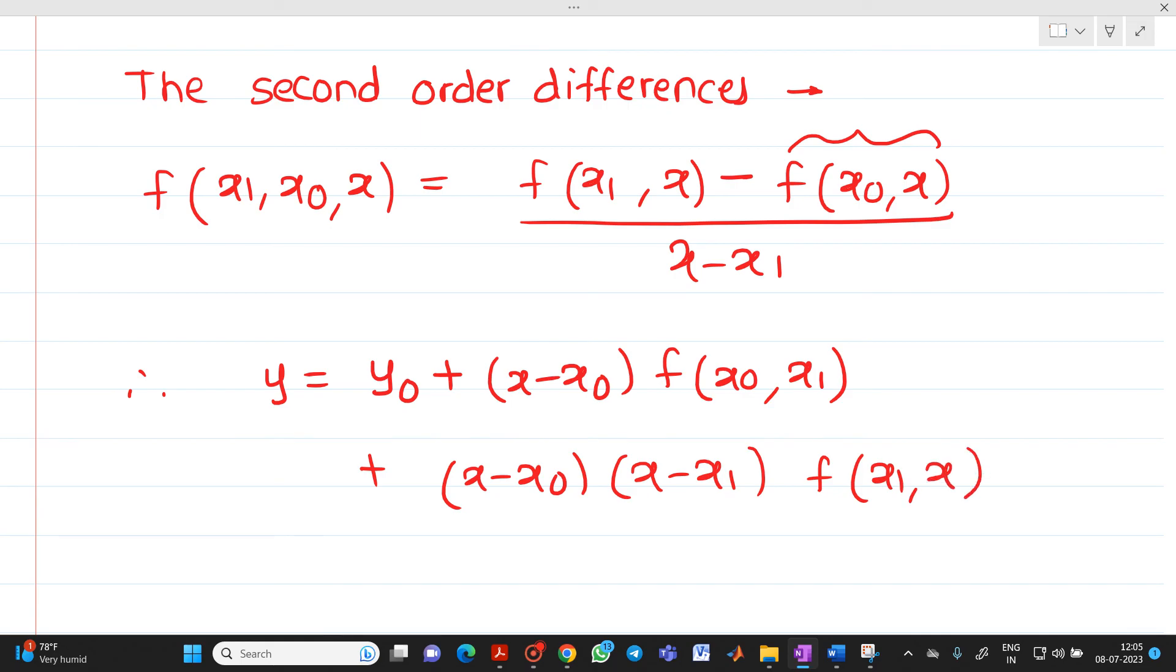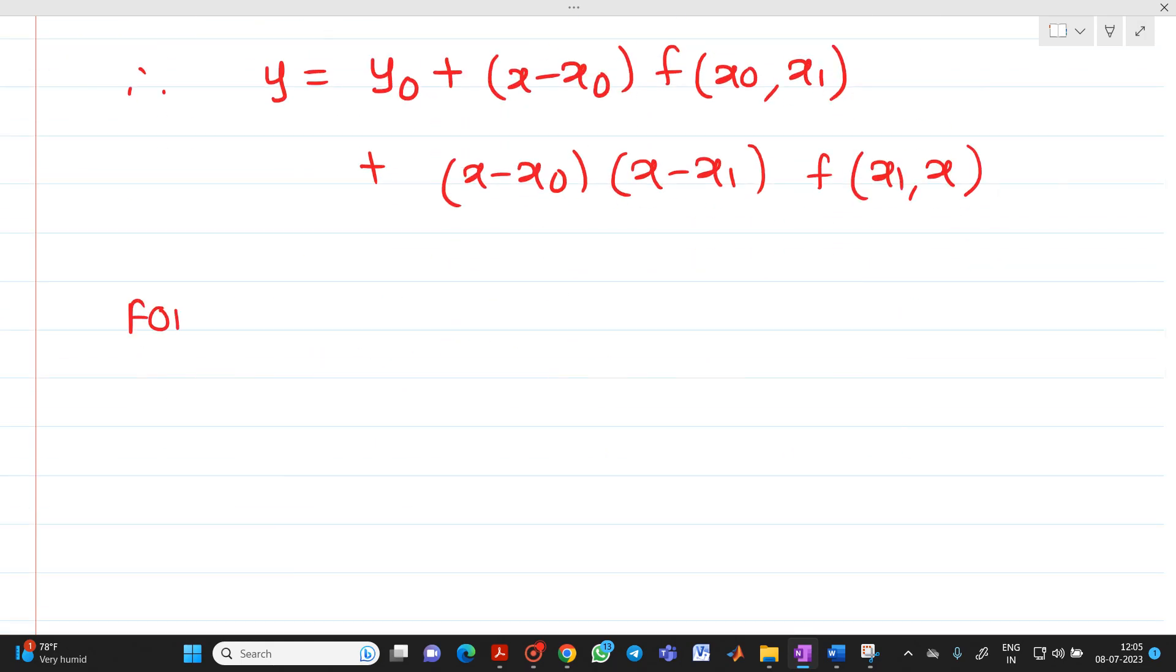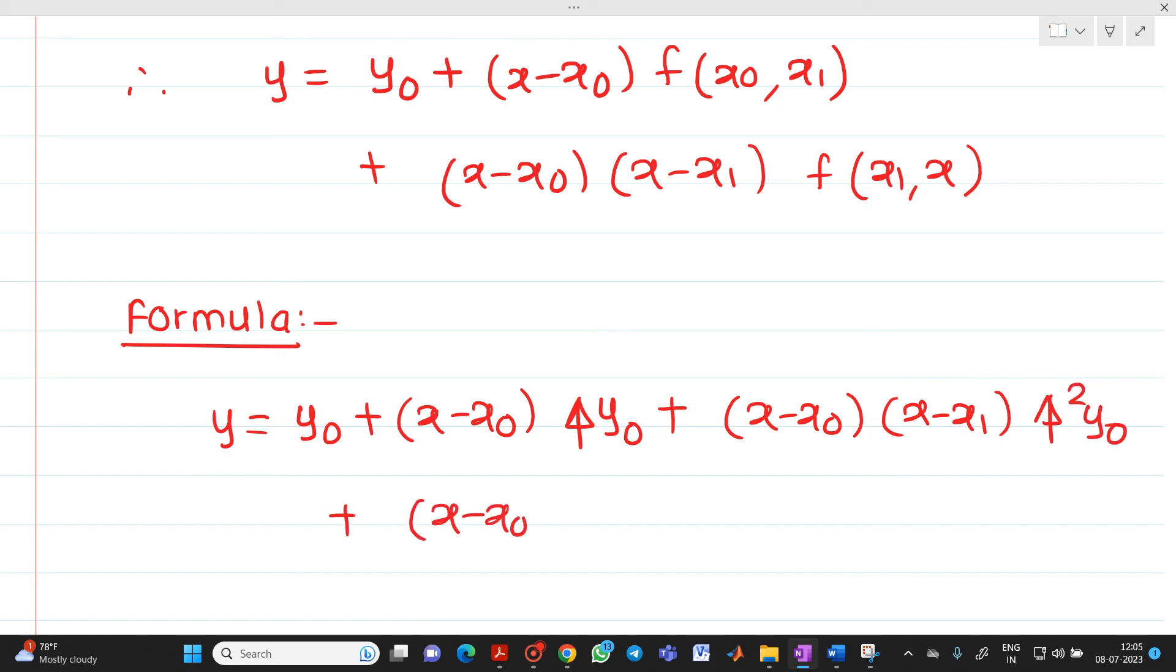Therefore, the final formula of Newton's divided difference interpolation is very easy. It will be y equal to y0 plus x minus x0 into del y0 plus x minus x0 into x minus x1 into del square y0 plus x minus x0 into x minus x1 into x minus x2 into del cube of y0, and so on. This will be the formula for Newton's divided difference interpolation.